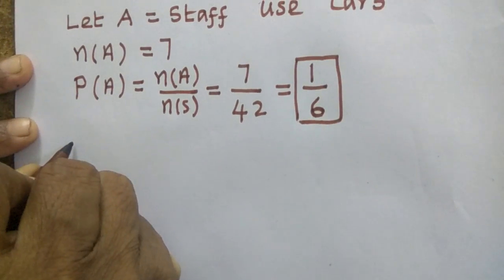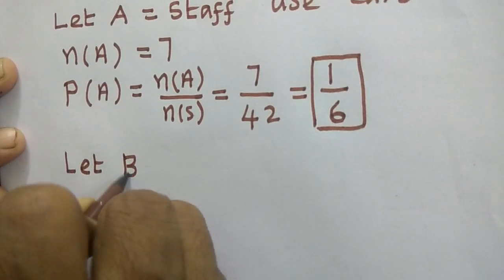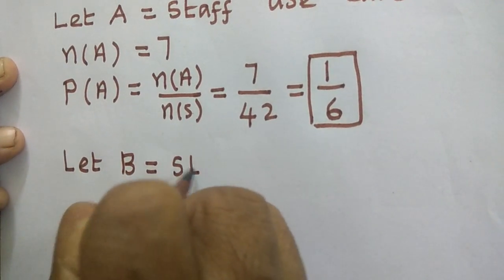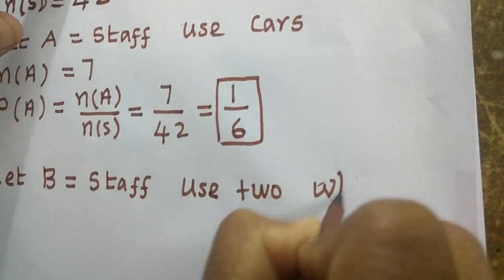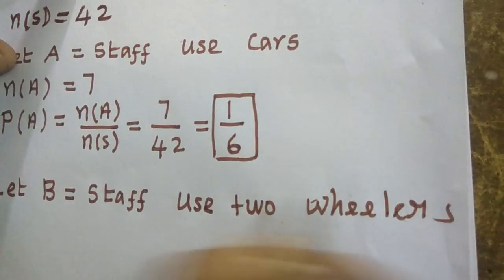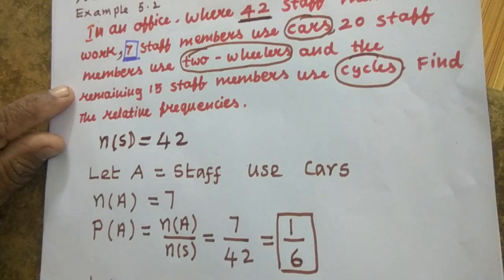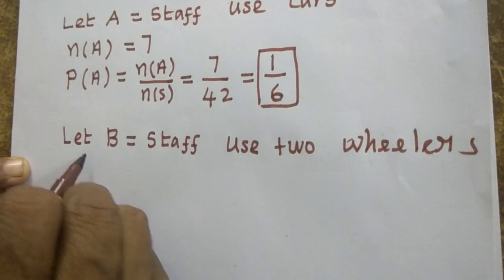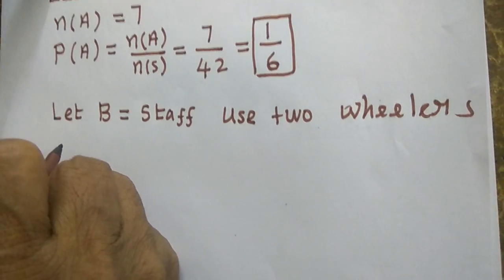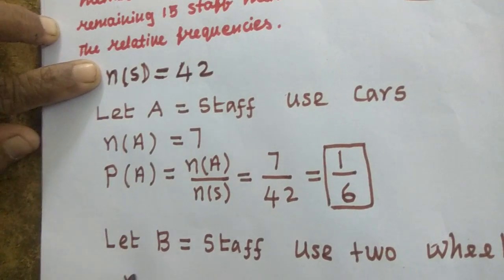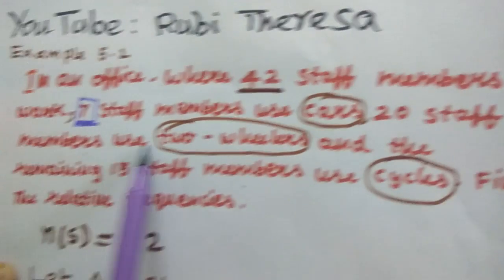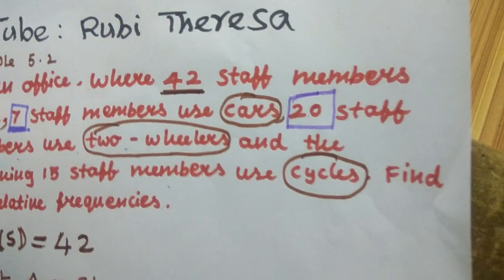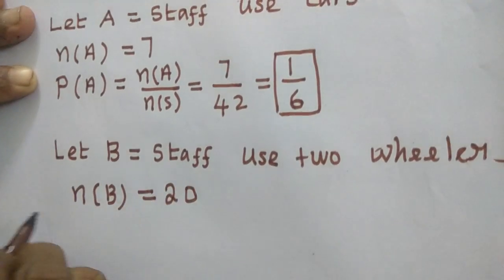Next one is let B equal to staff use two wheelers. It is given in the problem itself. Those who don't know, just copy down from the problem. Staff use two wheelers. Let B be the event of getting staffs using two wheelers. N of S is already here. So what you have to find out? N of B. What is N of B? 20 staff members use two wheelers. So N of B equal to 20.